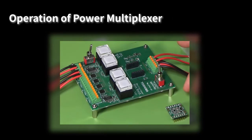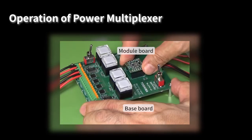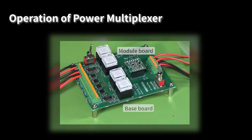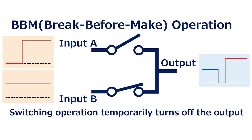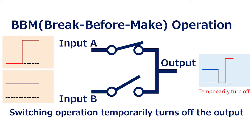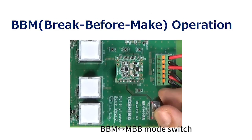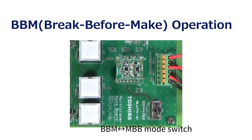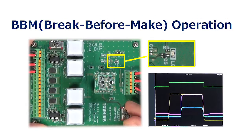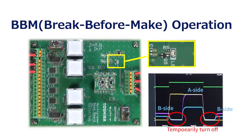The reference design circuit of the power multiplexer can be operated by attaching the module board to the base board. During BBM, that is break-before-make operation, the switching operation temporarily turns off the output. The operation mode of the power multiplexer module board can be changed using the toggle switch on the base board. It can be seen that the output is temporarily turned off when switching operation is performed during BBM mode.